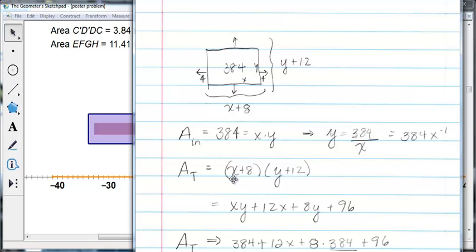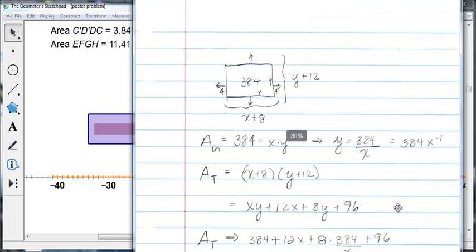So I multiplied this out. You can say x times y or xy plus 12 times x plus 8 times y plus 8 times 12, which is 96. And I could have substituted in the y right here, or I could multiply it out and then substitute it in.